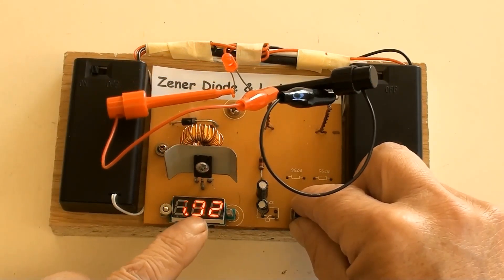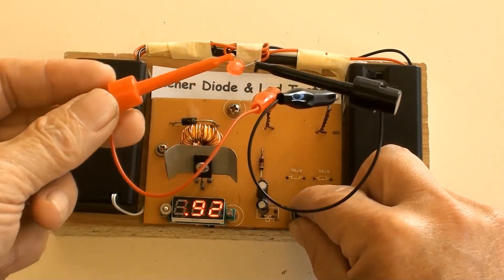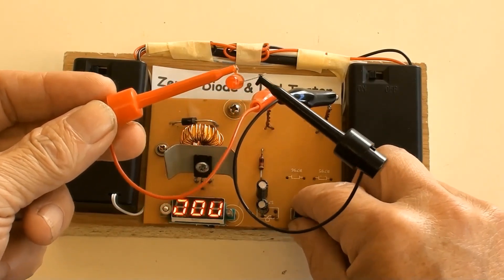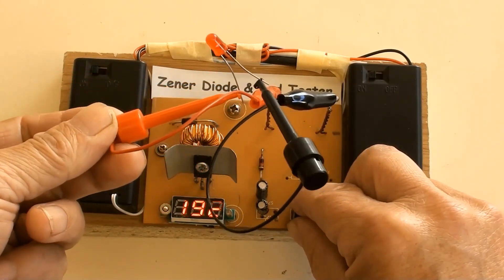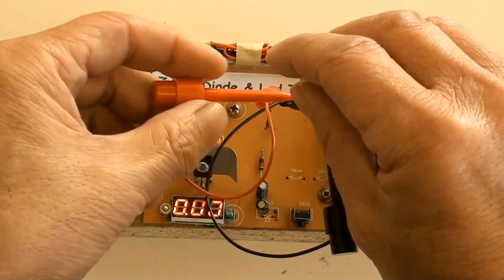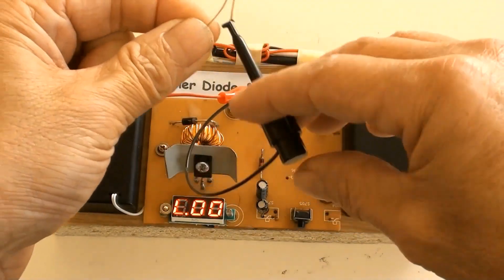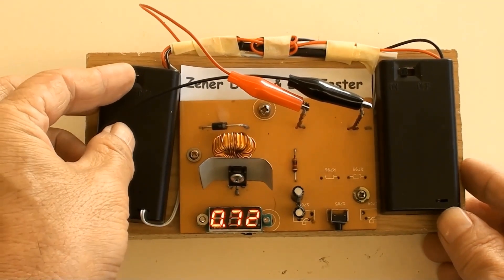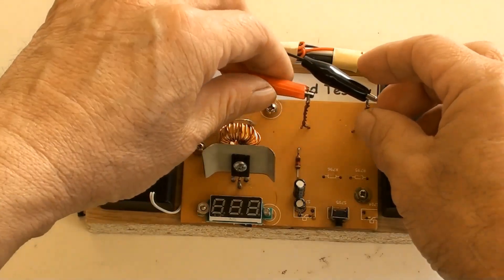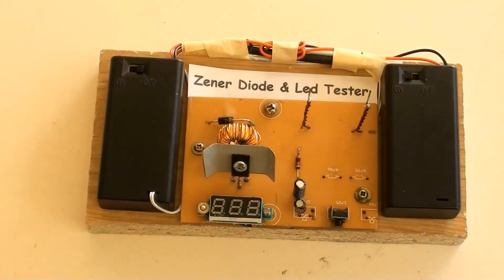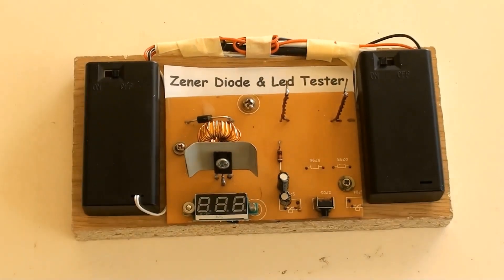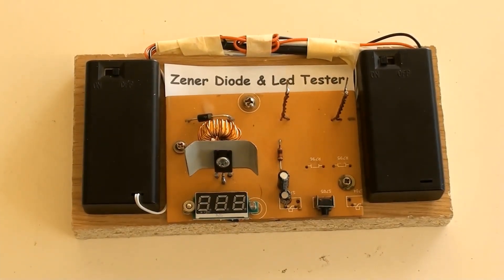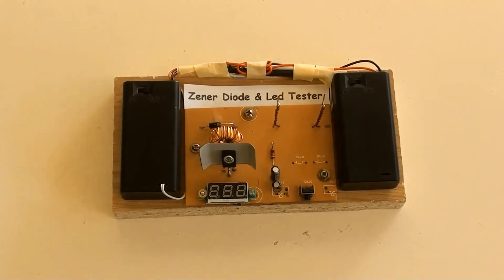It showed 2 volt. So this is a 2 volt LED. Thanks for watching this tester and how to use it.